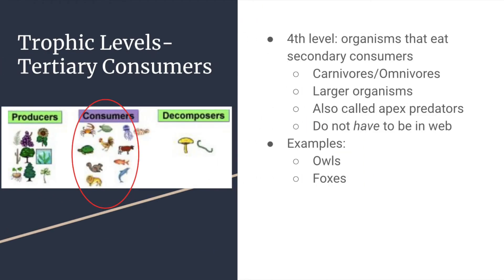Tertiary consumers are the fourth level. These organisms eat the secondary consumer. They are usually carnivores but can be omnivores as well. These are usually larger organisms and called apex predators. They don't have to be in the food web, but usually we see an apex predator. Examples of these would be owls or foxes.